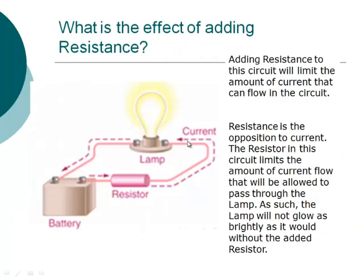So what's the effect of adding resistance? We previously saw this circuit without a resistor, and in that case the lamp would burn very brightly. But if I put a resistor in the circuit, then I'm going to limit the amount of current flowing in the circuit, and the lamp will not glow as brightly.